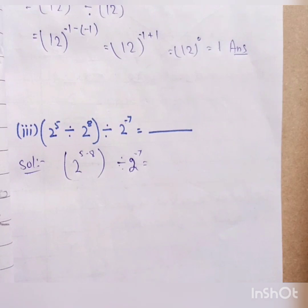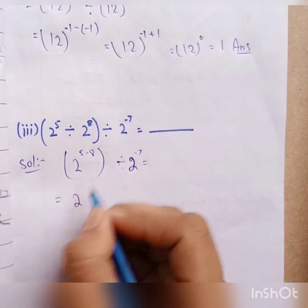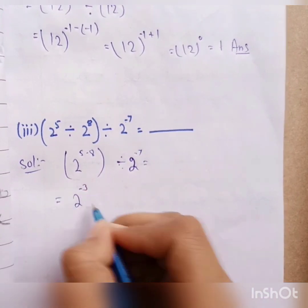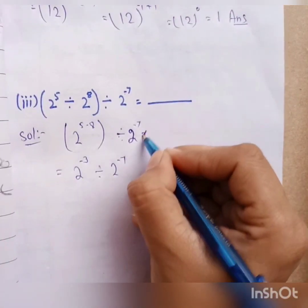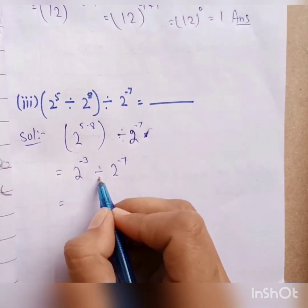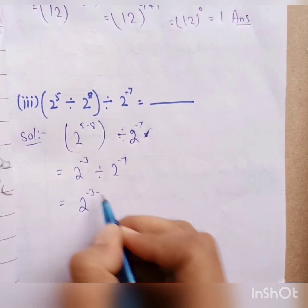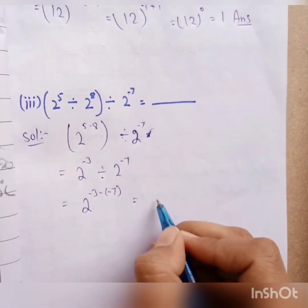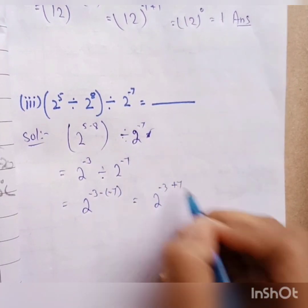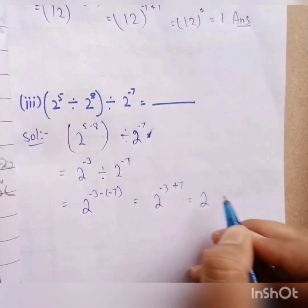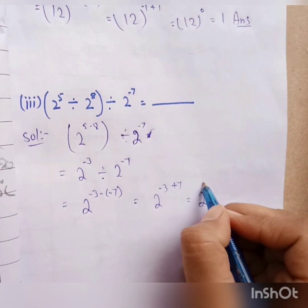Now, when the power is minus, we have five minus eight, giving minus three, divided by two minus seven. The base is the same for the division sign. We have minus three and minus seven. What do we do? We have two to the power of minus three minus minus seven. Minus minus becomes plus, so we have two to the power of minus three plus seven.